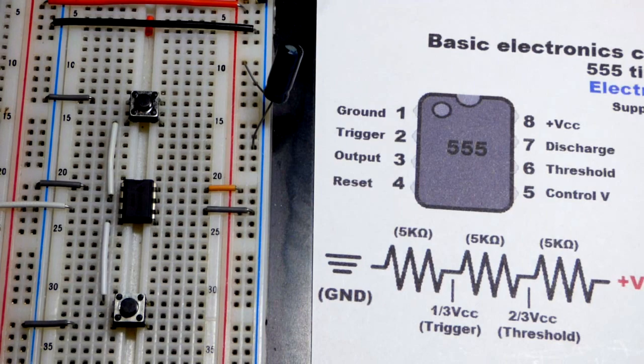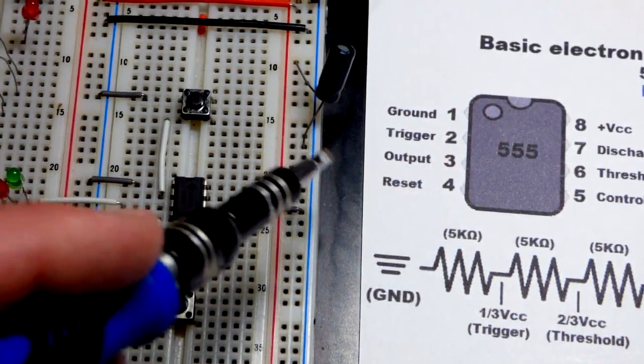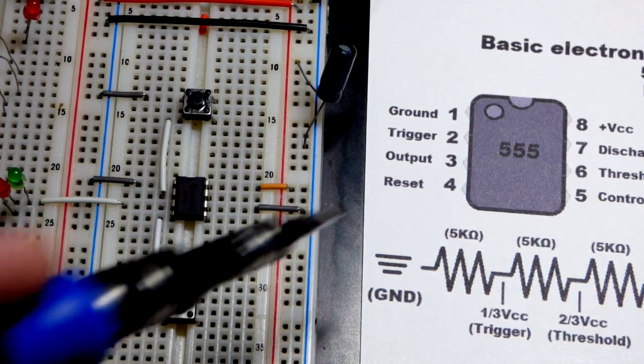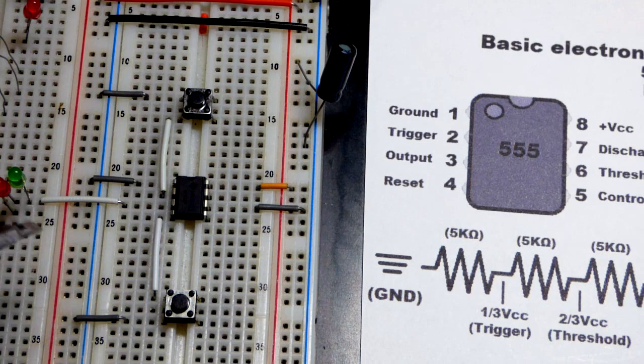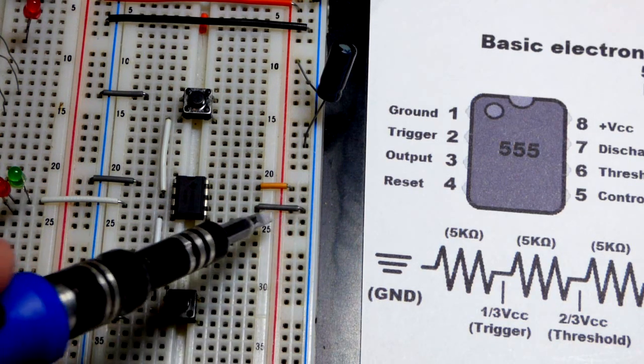And I also have this jumper here just to pin 3. That's the output that provides a high or a low power signal to the load. And so I just moved it over there because this is a large breadboard. We have a lot of space.